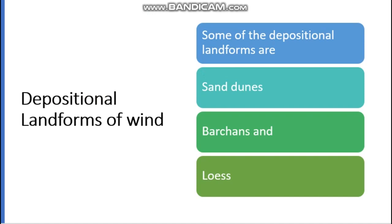Now, depositional landforms of wind. What are the depositional landforms of wind? Some of the depositional landforms are sand dunes, barchans, and loess. One by one we can learn about them in detail.